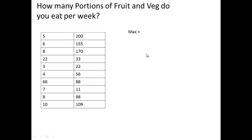To do this, the first thing we do is look for the maximum — we look through these numbers and find the highest one. The highest one we have here is 200, so we put in our 200. Then we look for the minimum, which is 3 — that's the smallest one — so we put in the 3.